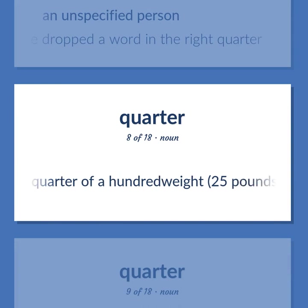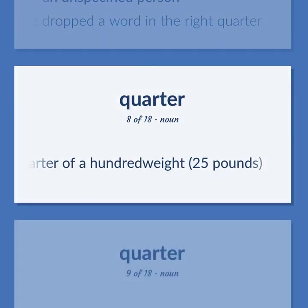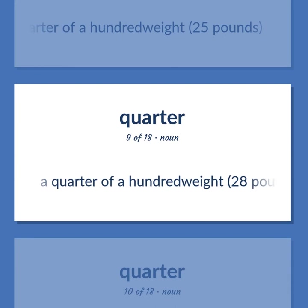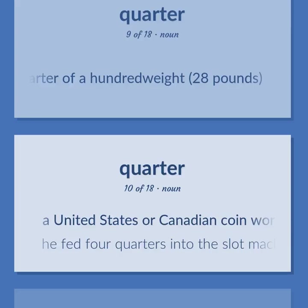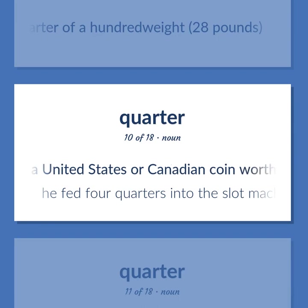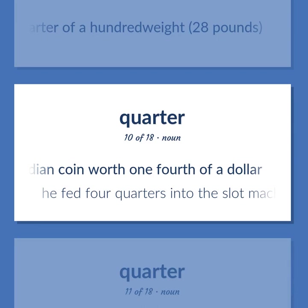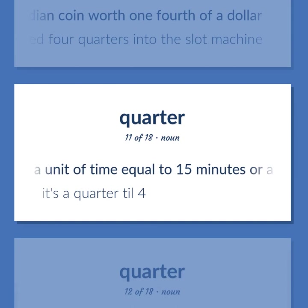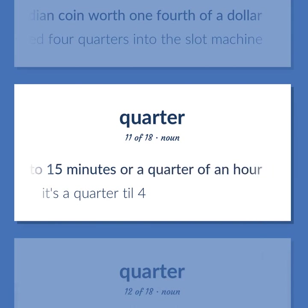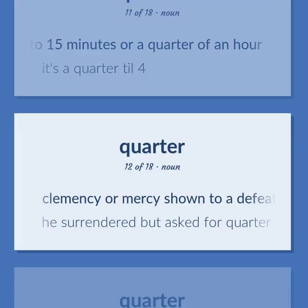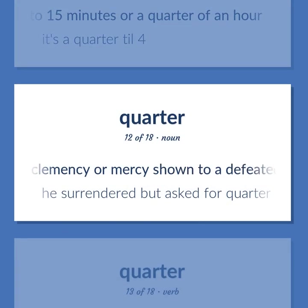A quarter of a hundredweight: twenty-five pounds (US) or twenty-eight pounds (UK). A United States or Canadian coin worth one-fourth of a dollar — he fed four quarters into the slot machine. A unit of time equal to fifteen minutes or a quarter of an hour — it's a quarter till four. Clemency or mercy shown to a defeated opponent — he surrendered but asked for quarter.